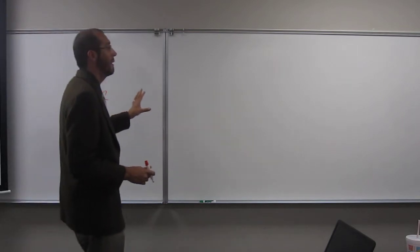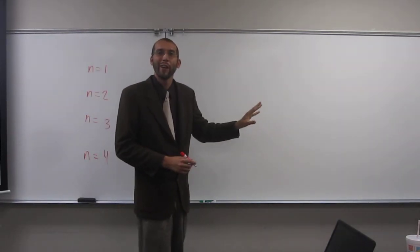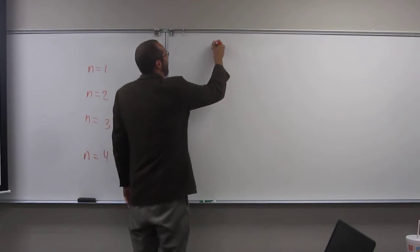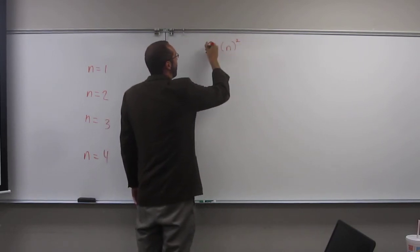So, again, what is the electron capacity for a principal energy level? How do we figure it out? 2 times n. 2n to the what? 2 squared. 2 squared, right? So that's the electron capacity.